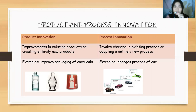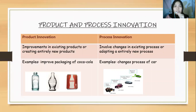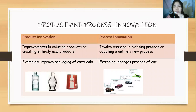Product and process innovation: product innovation is improvement in an existing product or creating entirely new products. For example, Coca-Cola products — they improve their packaging year by year, from bottled, into tin, into can. Process innovation involves changes in an existing process or adapting an entirely new process. For example, the changes in the process of manufacturing cars from the 18th century to now.